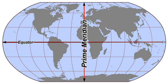East–West: Eastern Hemisphere, the half that lies east of the prime meridian and west of the 180th meridian. Western Hemisphere, the half that lies west of the prime meridian and east of the 180th meridian. This East–West division can also be seen in a cultural sense, as a division into two cultural hemispheres.